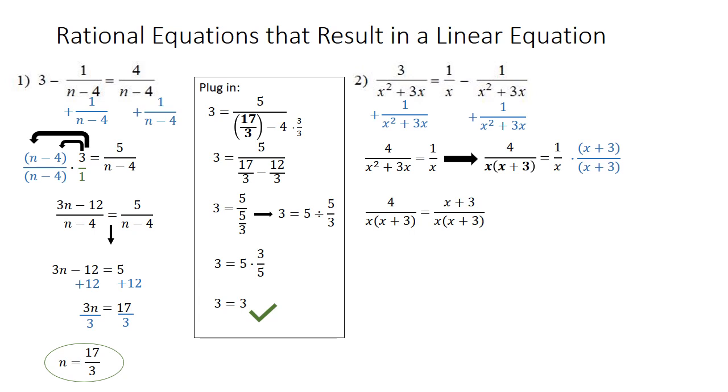We have the same denominator on both sides of the equation. So we're going to take the denominators out. So we get 4 equals x plus 3. We're going to subtract 3 from both sides. So we get x equals 1.